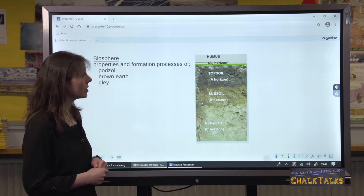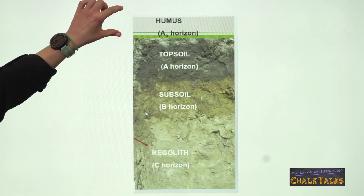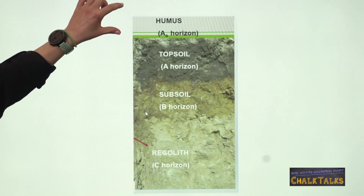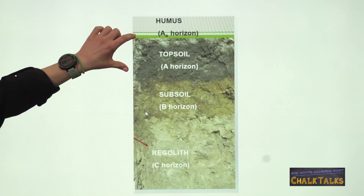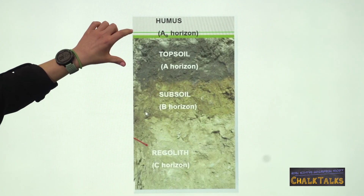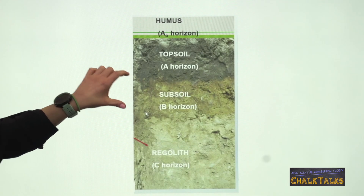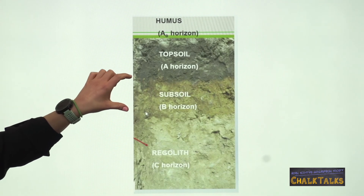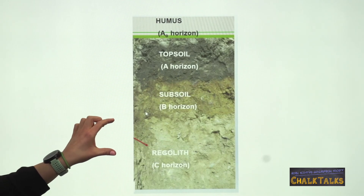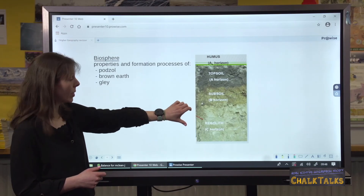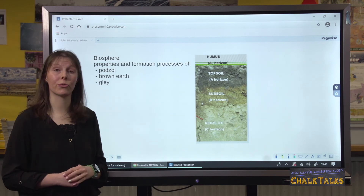At the surface we have something called an AO horizon. This is closest to our vegetation, and the O stands for organic because of the organic matter in it. Below that we have the A horizon, otherwise known as the topsoil. Below that the B horizon, sometimes called the subsoil. And finally at the bottom we have the C horizon, sometimes referred to as parent material or regolith. Combined, this makes up our soil profile.